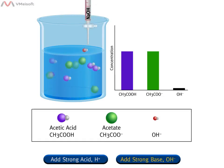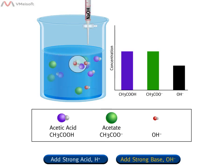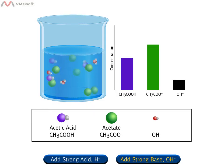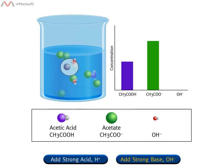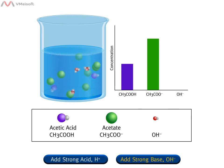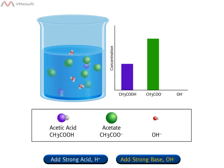Only hydroxide ions, OH-, from the strong base sodium hydroxide are shown entering the solution. Sodium ions are not shown because they are spectator ions — they do not participate in the reaction. The strong base, hydroxide (OH-), reacts with the acid component of the buffer, acetic acid (CH3COOH), reducing the base component of the buffer, acetate (CH3COO-), and water. This buffer has resisted a change in pH by removing the strong base hydroxide from the solution.